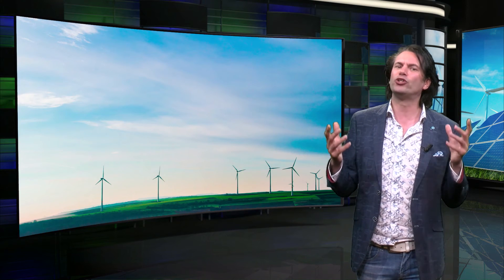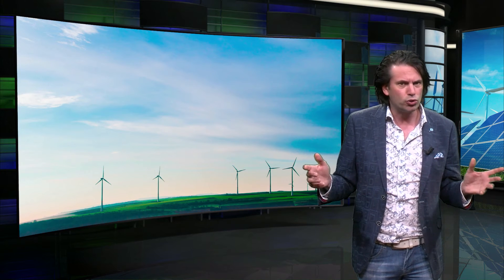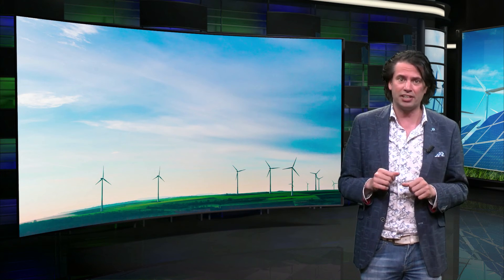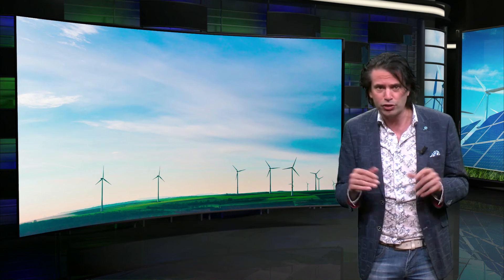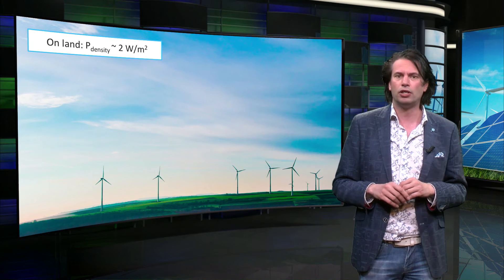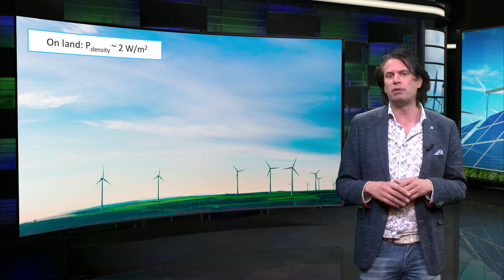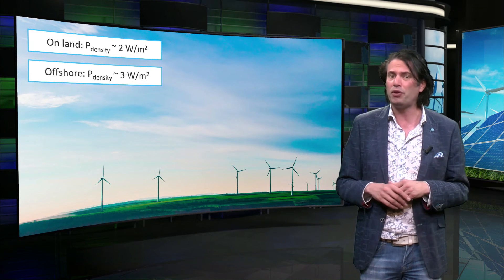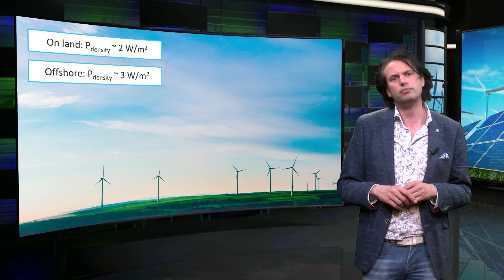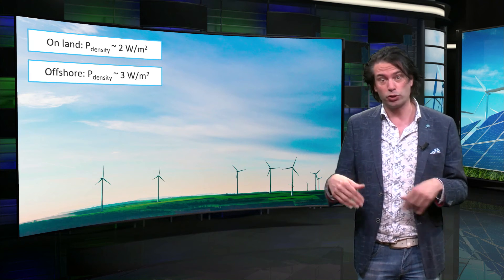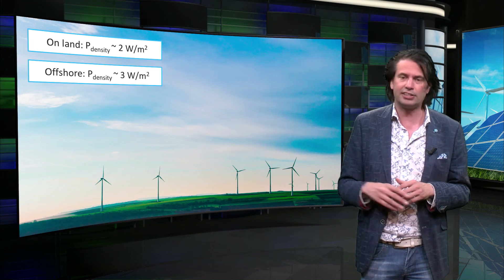Let's also look at the surface power density of wind energy per land area. Wind turbines can't be placed too close to each other because they will steal each other's wind energy. Research has found that the surface power density of land-based wind energy, averaged over 24 hours, is about 2 W/m², resulting from the spacing of wind turbines as well as the availability of less wind inland. An offshore wind park will result in a higher power density, in the order of 3 W/m². To get an average energy density in kWh per square meter per year, multiply the surface power density by the hours in a year and divide by 1000 — in this case it is 70.5 kWh/m²/year.